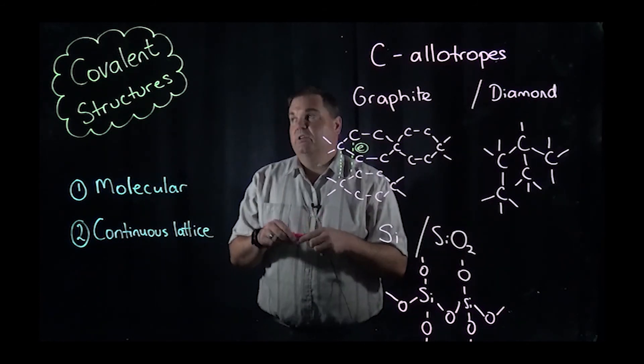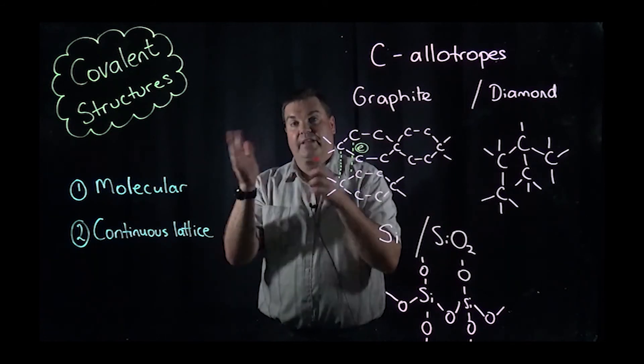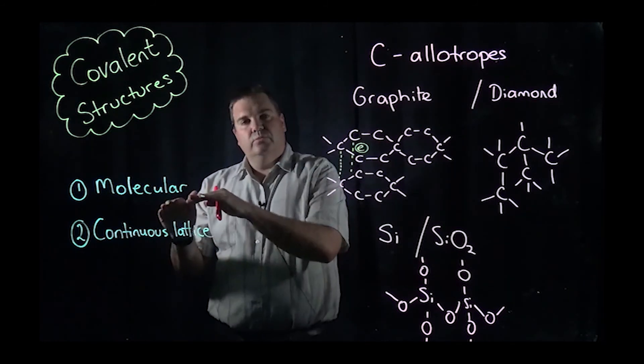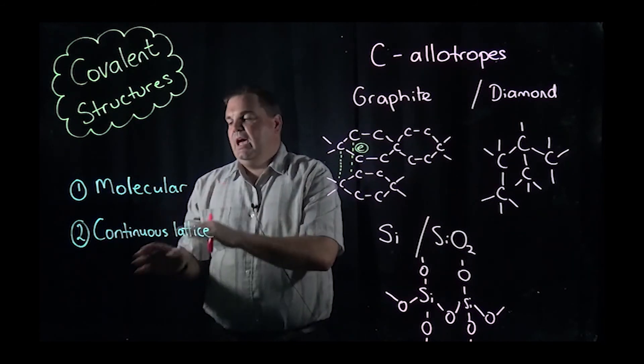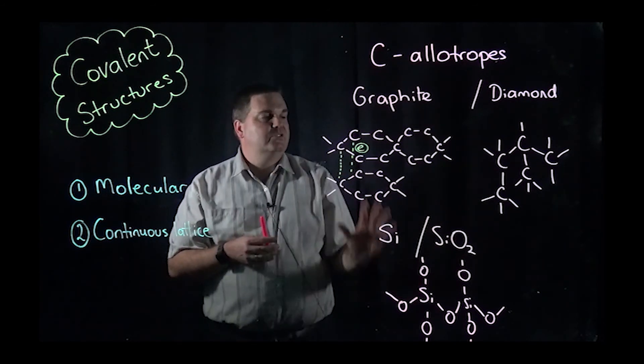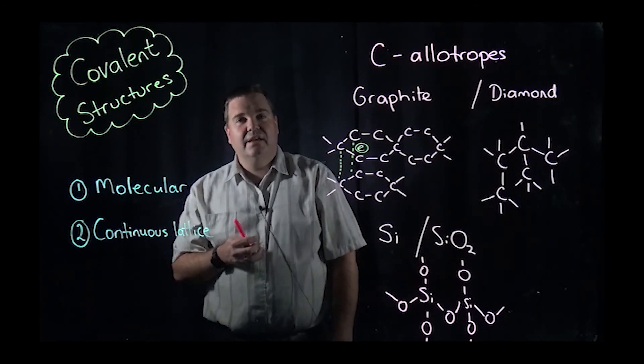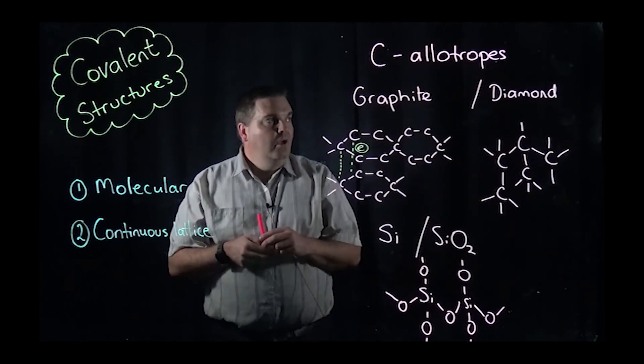That's a different type of structure for a covalent bonding type of molecule, or covalent substance I should say. There's molecules which are small, independent, low melting and boiling points. And then you've got a couple of examples of continuous lattices which have very big three-dimensional structures, a bit more like ionic substances or metallic substances. So they have much higher melting points.